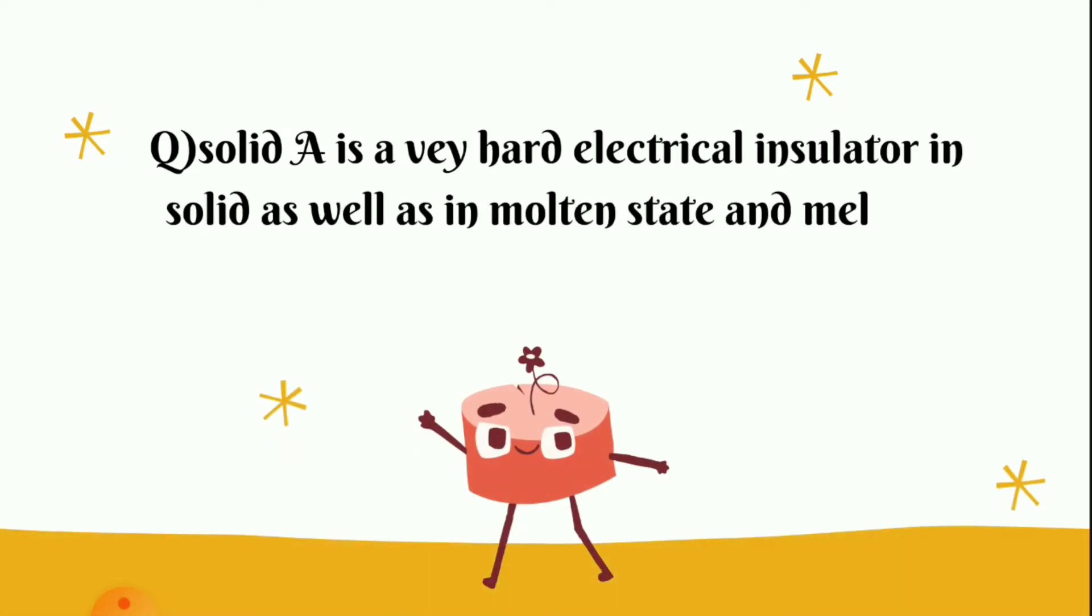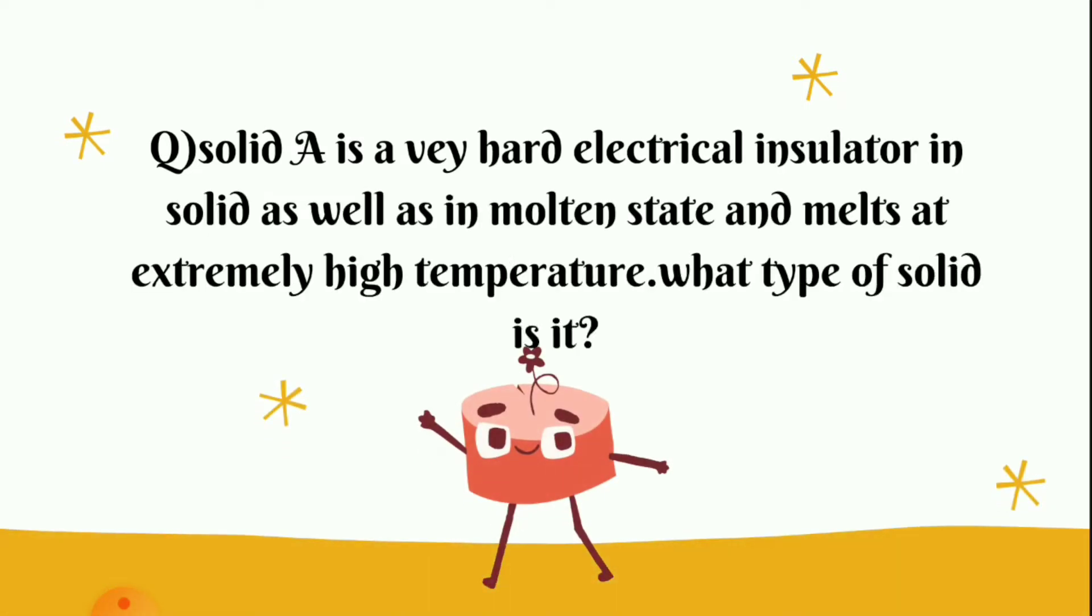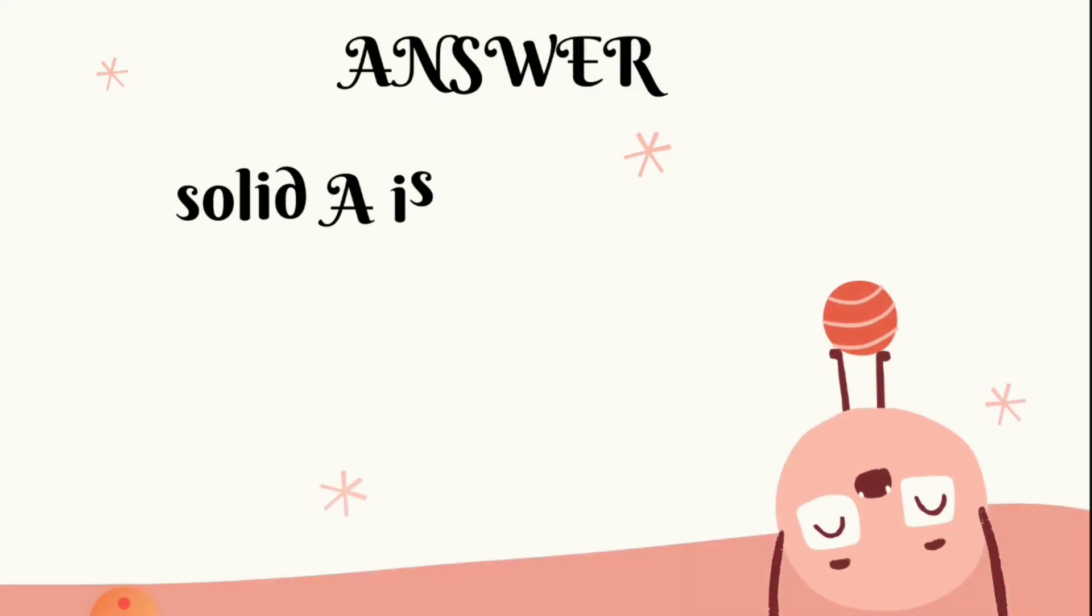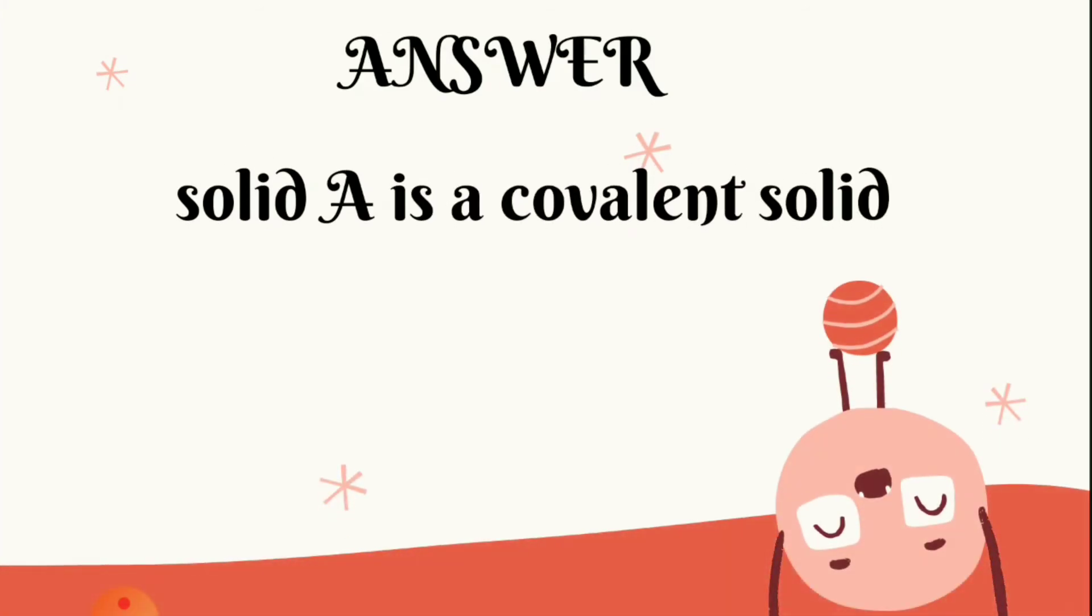First question: solid A is a very hard electrical insulator in solid as well as in molten state and melts at extremely high temperature. What type of solid is it? Answer: solid A is a covalent solid.